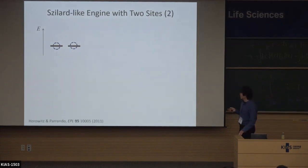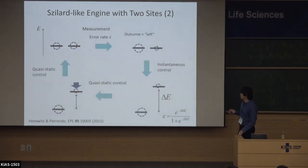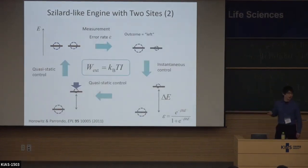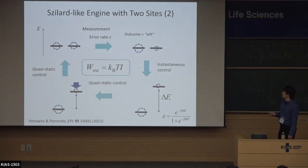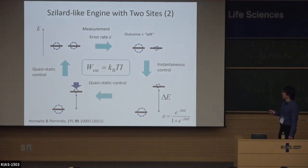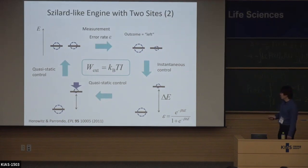It is simpler to introduce measurement error to this model than to the particle model. We have a probability distribution like this, and then we perform the measurement of the position of the particle with error rate epsilon. After the measurement, we have some probability distribution such that even if you find the particle in the left side, there is some small probability that the particle is actually in the right side.